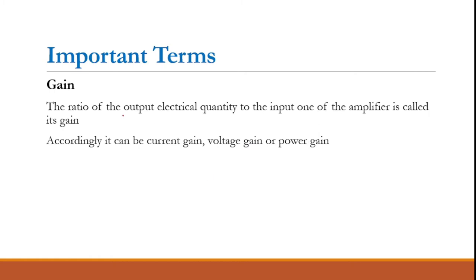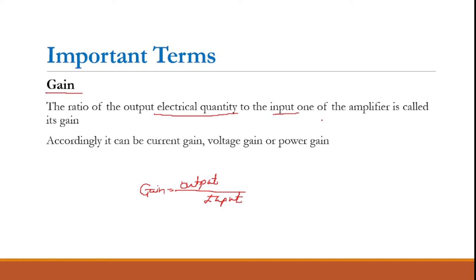Before proceeding to the multistage amplifier, we need to understand some important terms. One important term is gain — the gain is nothing but output divided by input. In the case of an amplifier, output electrical quantity divided by input electrical quantity is called the gain of the amplifier. The electrical quantity may be in terms of current, voltage, or power, giving us current gain, voltage gain, and power gain respectively.